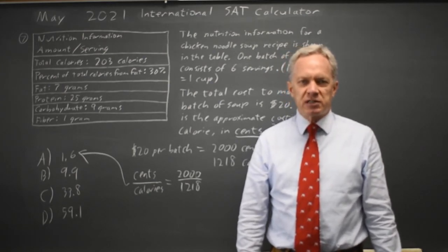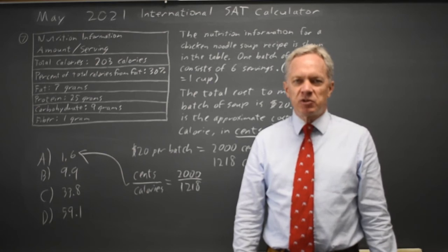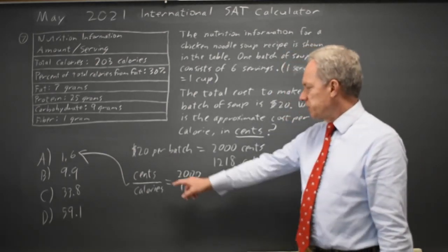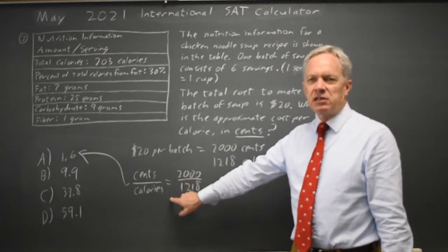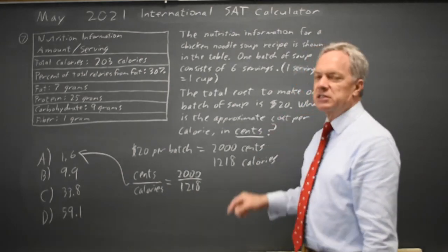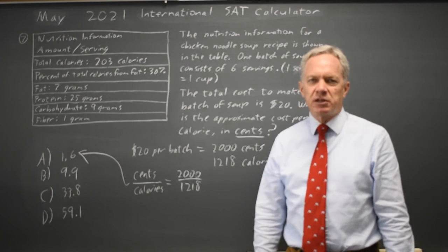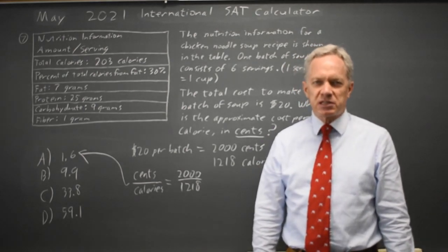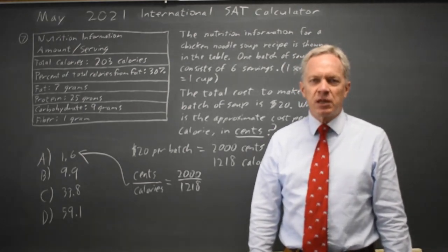College Board often asks questions that can be simplified by looking at the units—dimensional analysis. Since they're asking for the cost per calorie in cents, which is cents per calorie, we set that up as the number of cents divided by the number of calories.